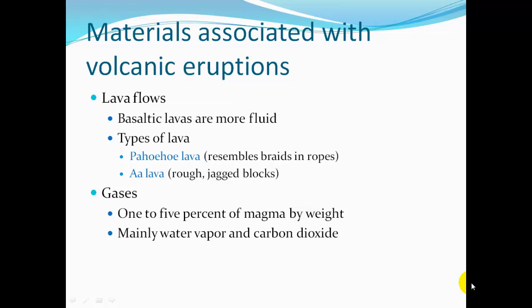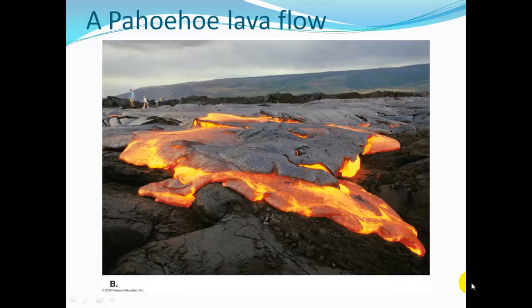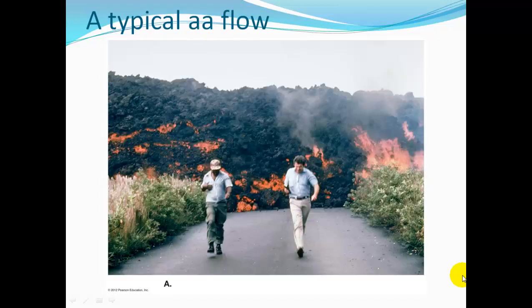Lava flows: basaltic lavas are more fluid. The types of lava flows you'll see are pahoehoe lava, which represents braids and ropes, and ah-ah lava — rough, jagged blocks. Gases in the lava make up 1 to 5% of magma by weight, mostly water vapor and carbon dioxide. Pahoehoe lava develops a ropy appearance as the surface cools. Ah-ah lava is blocky, chunky, and moves a lot slower.